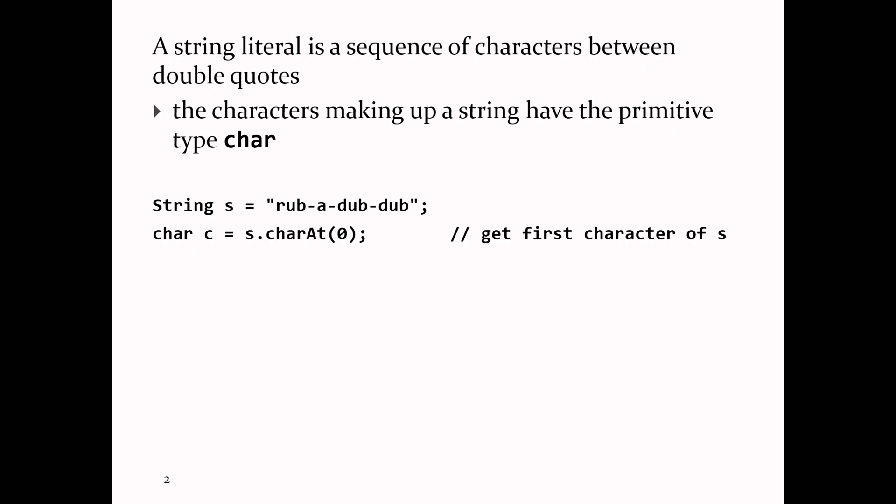If you wanted to do something like concatenate two strings or copy a string to another string in C, you'd call some function and pass in the string object. One of the things you have to get used to in an object-oriented programming language is that you end up asking a variable that refers to an object to do something. The syntax is always: variable name, dot, then the name of the method associated with the object.